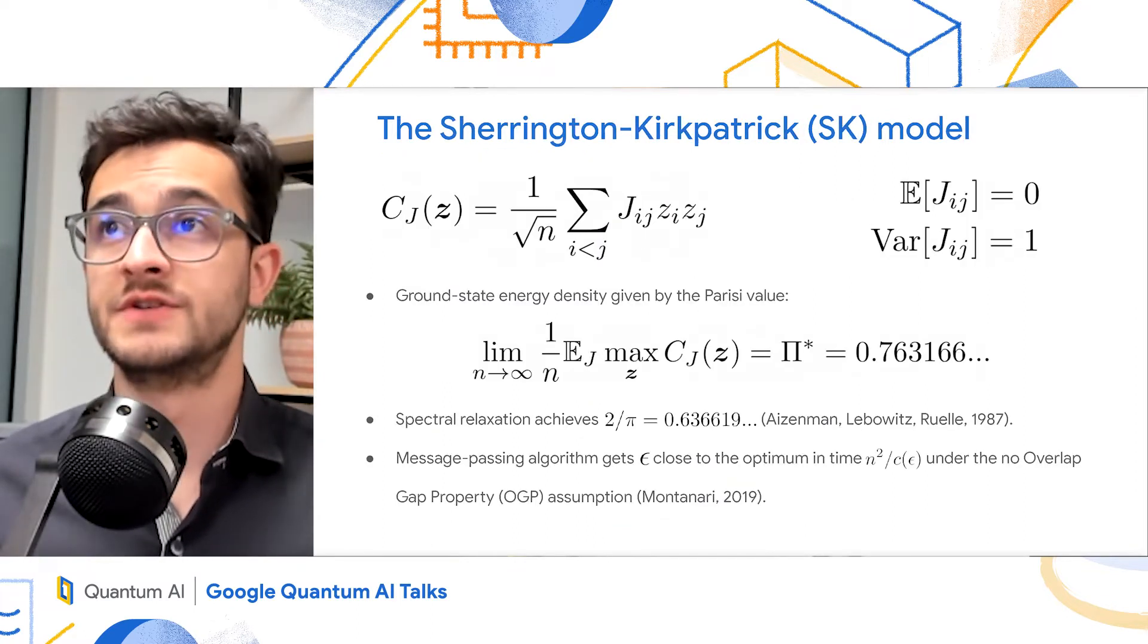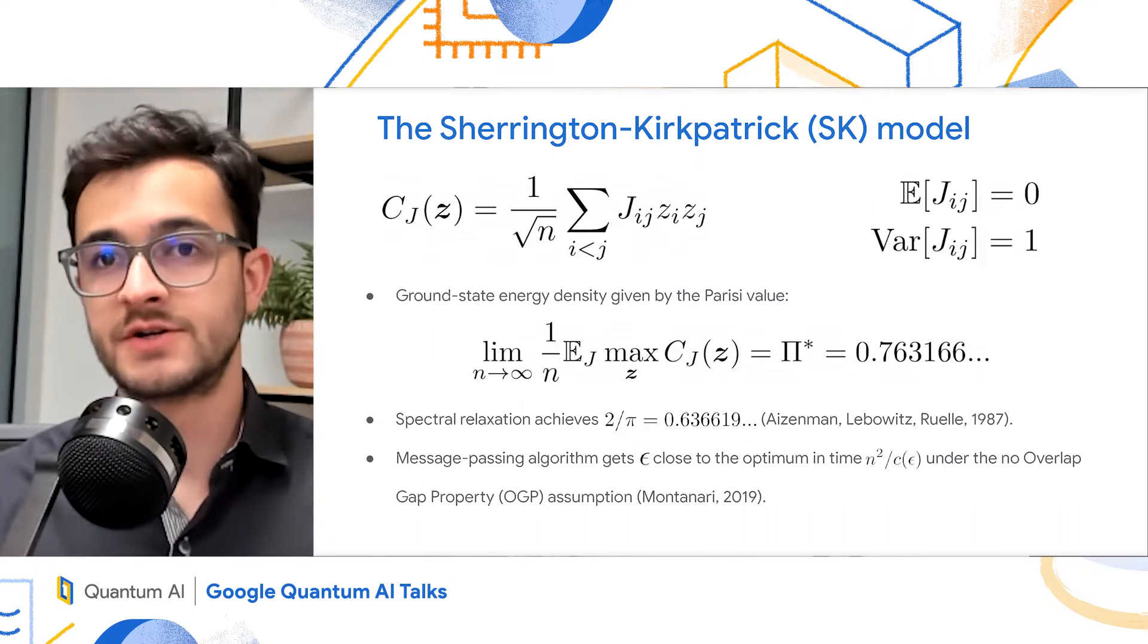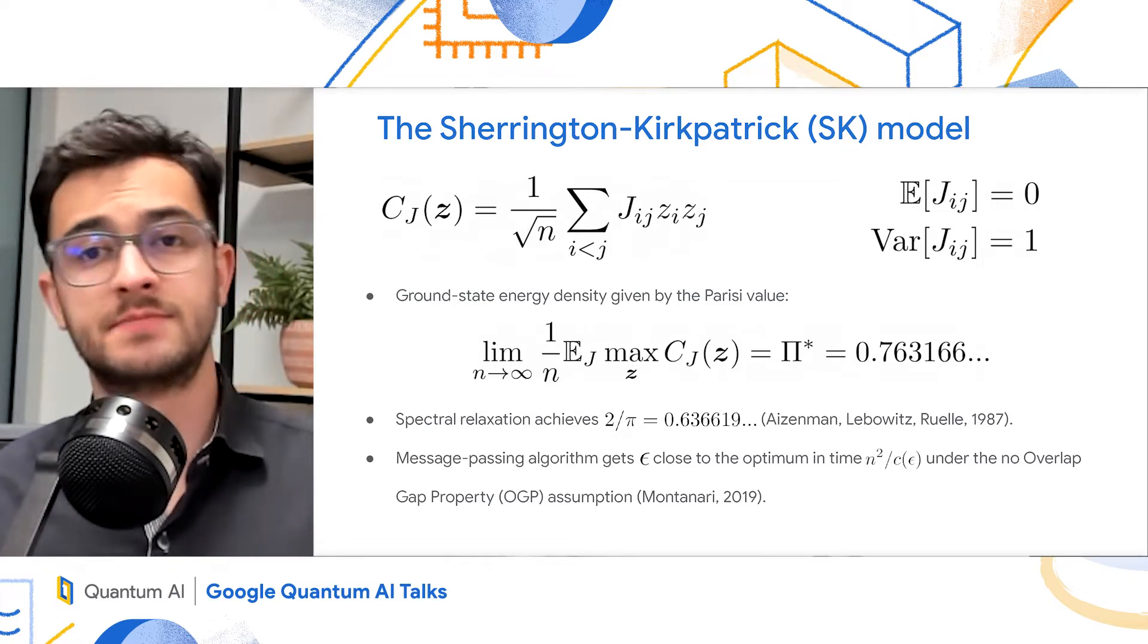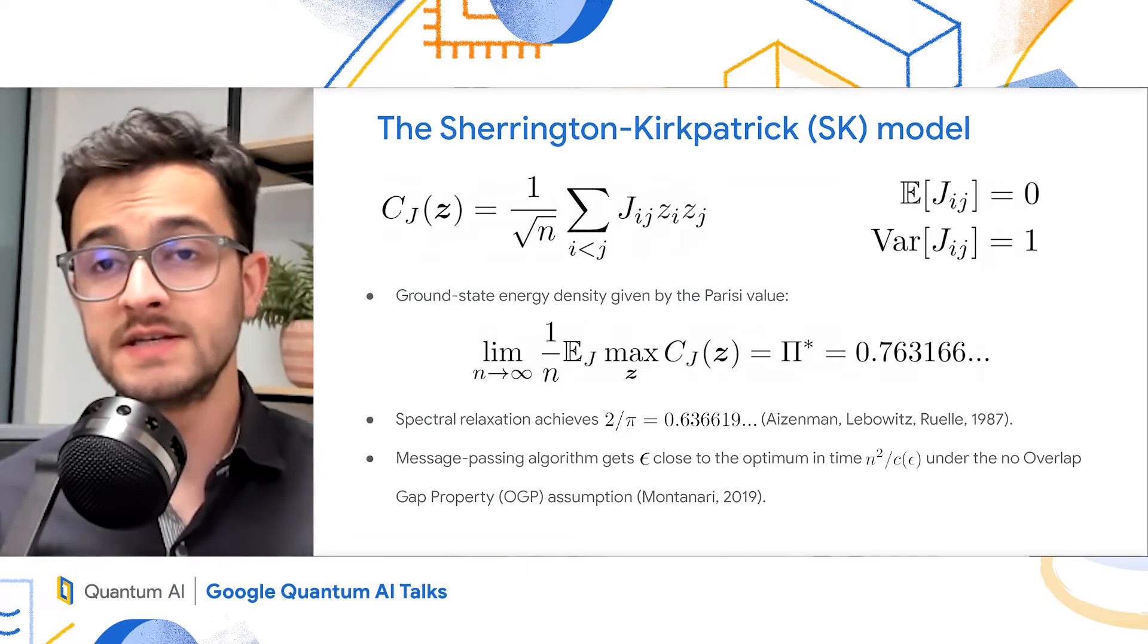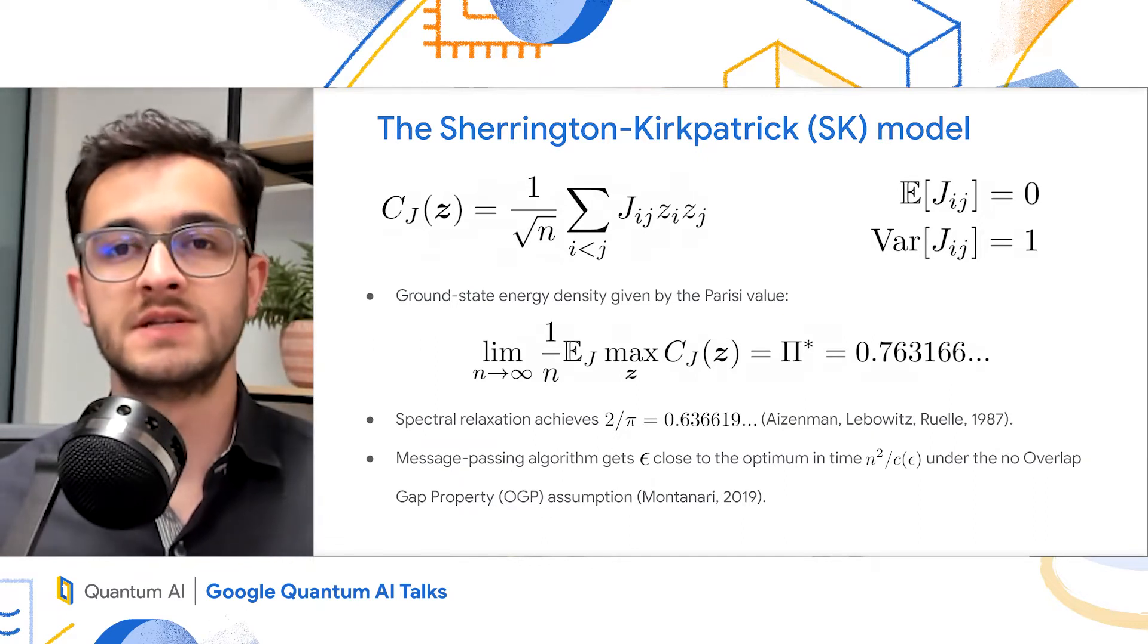So the first problem I'm going to talk about is the Sherrington-Kirkpatrick model, or the SK model. Its cost function on a bit string is given by that equation. Each bit takes plus or minus 1. And you can see for any pair of bits i,j, there's a coupling J_ij with mean 0 and variance 1.